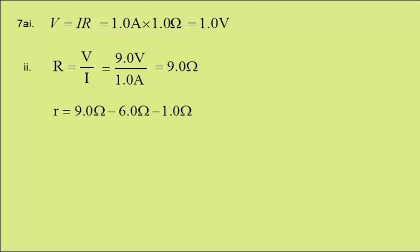Little resistor, then, is the total circuit resistance of 6 ohms. The internal resistance, therefore, is the total circuit resistance of 9 ohms minus the resistors we know about, the 6 ohms and the 1 ohms, meaning it has a value of 2 ohms.